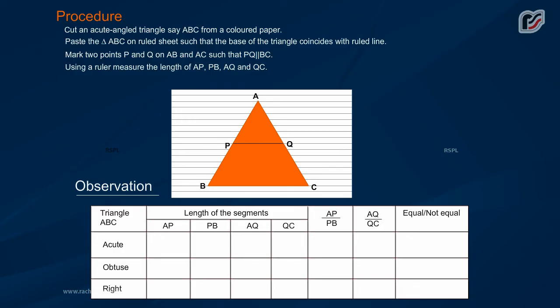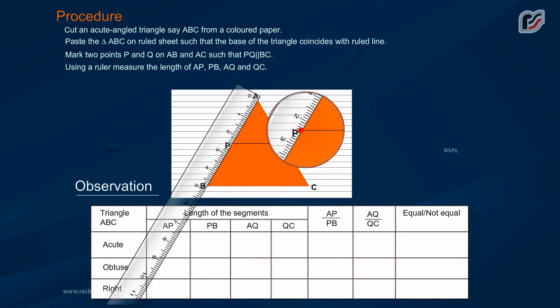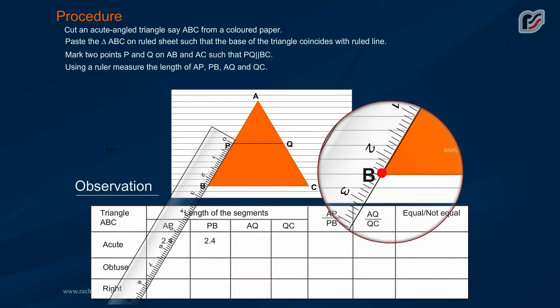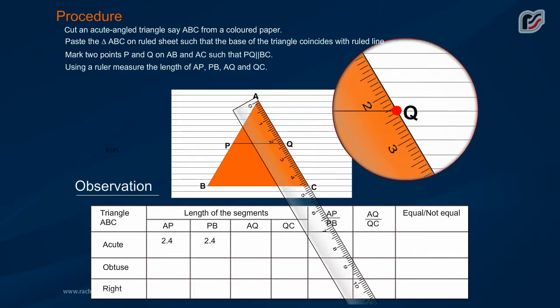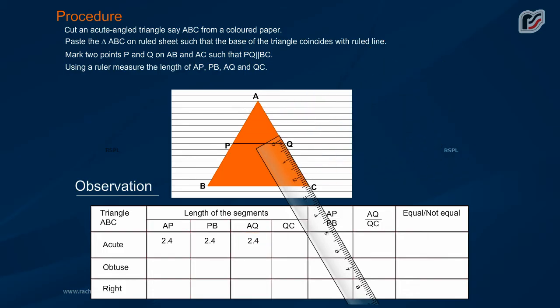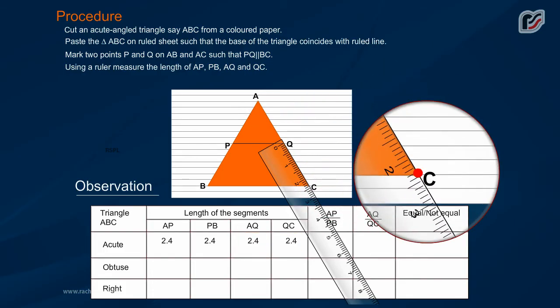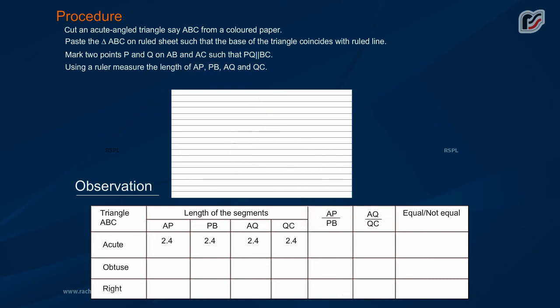For acute: length of the segment AP is 2.4, PB 2.4, AQ 2.4, QC 2.4. 2.4 by 2.4 is equal to 1. 2.4 by 2.4 is equal to 1. That is AP by PB is equal to AQ by QC.